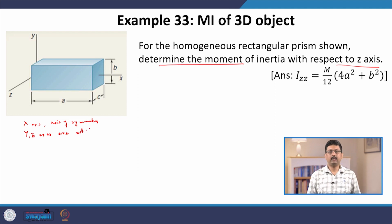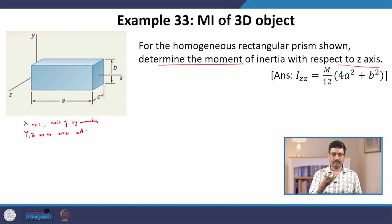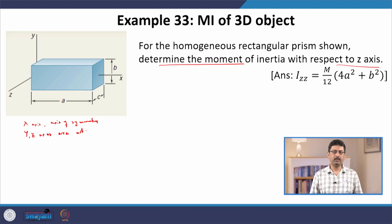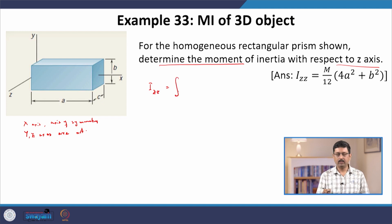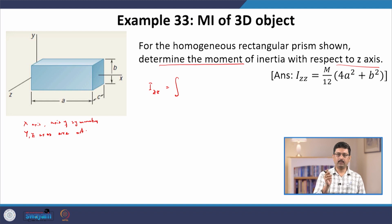But that has nothing to worry about. We cannot readily use the results listed in our previous lecture, but we do not worry about that because now we know the general formula for calculating moment of inertia about any arbitrary z axis.